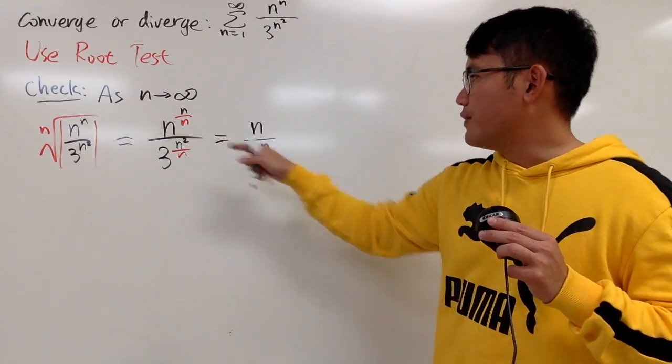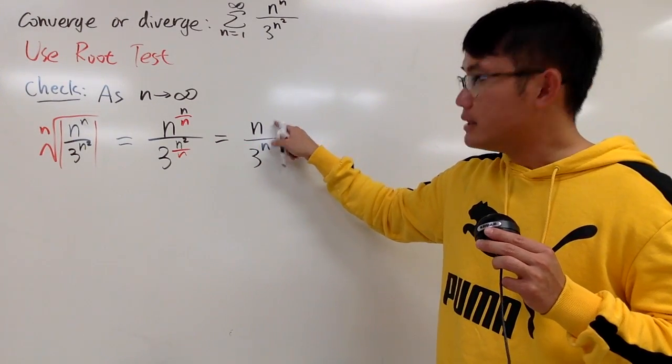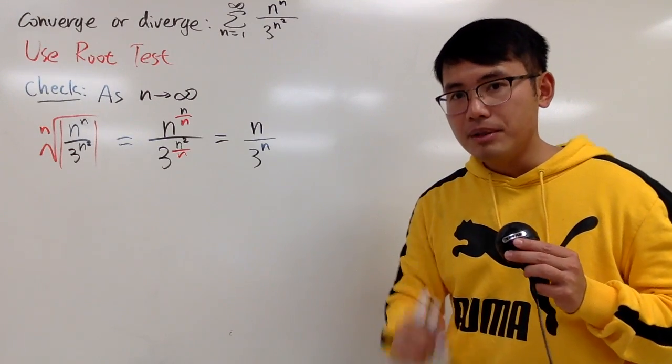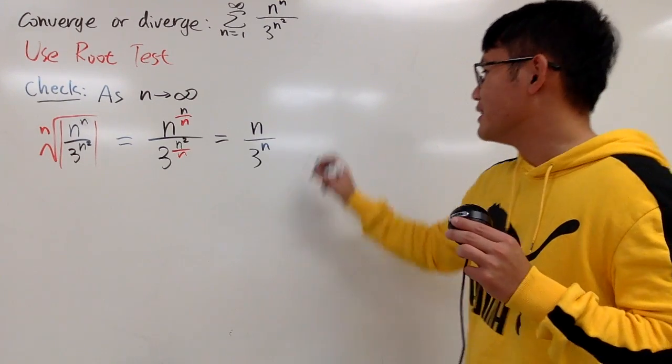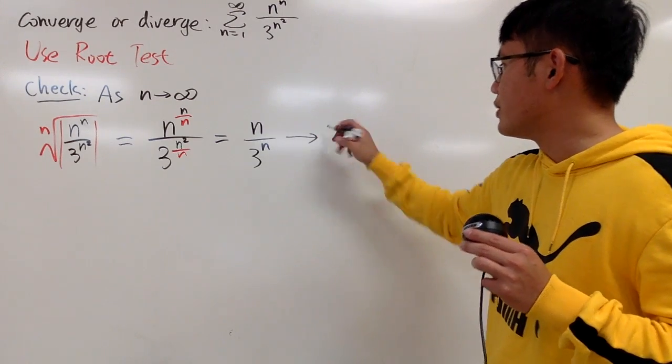Well, as n goes to infinity, you know on the top, it's infinity. On the bottom, 3 to infinity is still infinity. But let me tell you, the bottom infinity is much bigger by the list. So you can say this right here approaches 0.